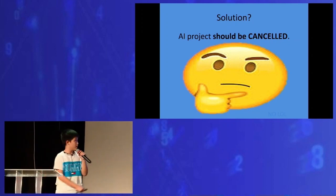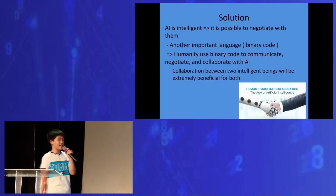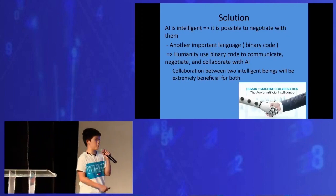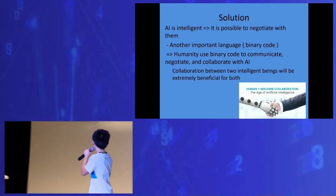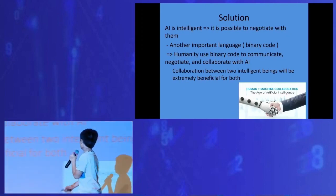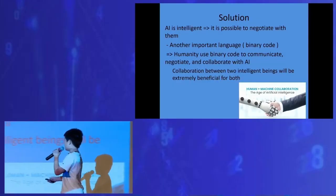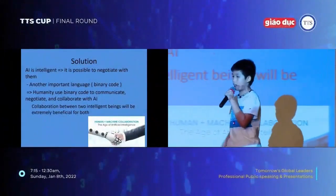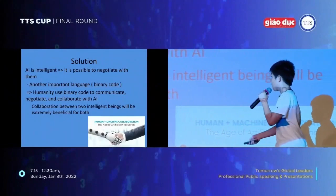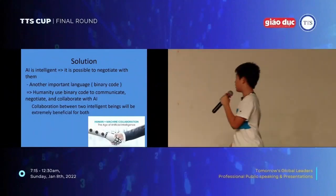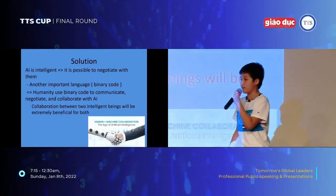No. Because AI is intelligent, meaning it is possible to negotiate with them. Another important language is binary code. Humanity uses binary code to communicate, negotiate, and collaborate with AI. Collaboration between two intelligent beings is extremely beneficial.